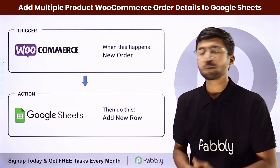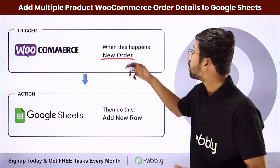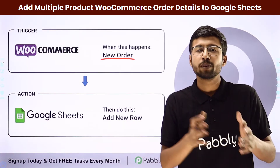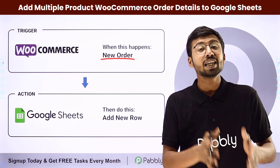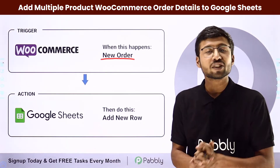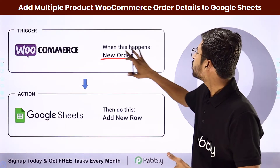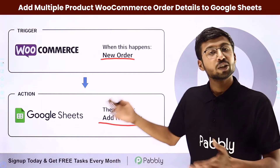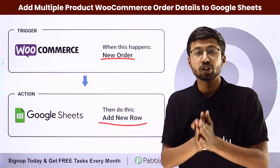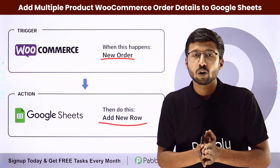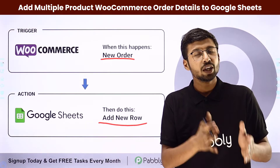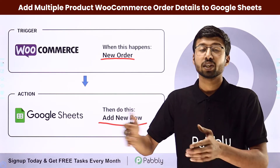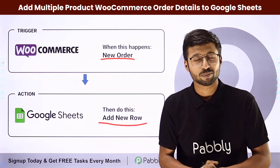The trigger of this automation will be getting a new order on a WooCommerce store. Instead of WooCommerce you can use any other e-commerce platform, and the action will be adding those order details into a Google Sheet as a new row. Using this automation, if your customer orders different products in the same order, you are going to add that same data into Google Sheet automatically.